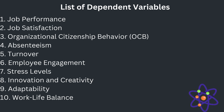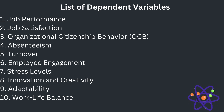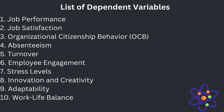Employee engagement — the level of an employee's emotional and cognitive connection to their job and organization. Stress level — the amount of stress experienced by employees in their work environment. Innovation and creativity — the ability of employees to generate new ideas and solutions. Adaptability — how well employees adjust to changes in the work environment or job roles. Work-life balance — the equilibrium between an employee's work responsibilities and personal life.